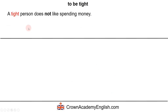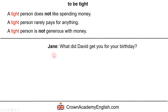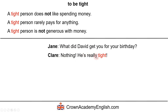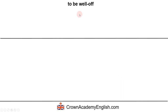The next expression is 'to be tight.' A tight person does not like spending money, rarely pays for anything, and is not generous with money. For example, Jane asks 'What did David get you for your birthday?' and Claire replies 'Nothing — he's really tight.' Another example: Mark never buys anyone a drink in the pub; he's very tight.